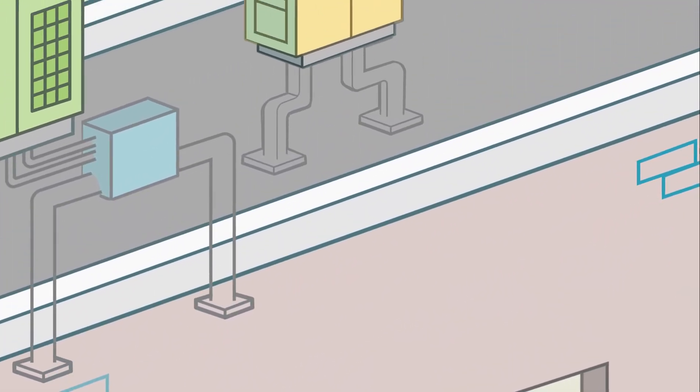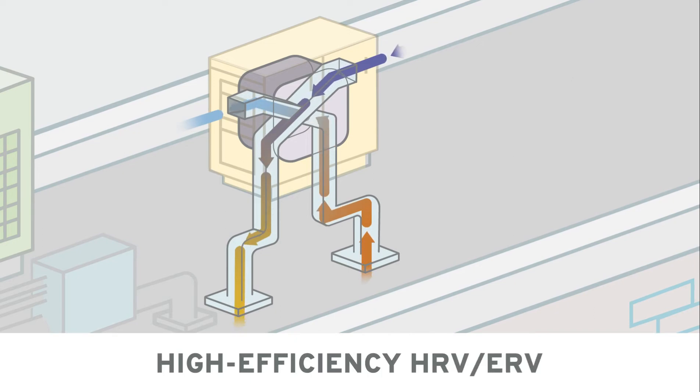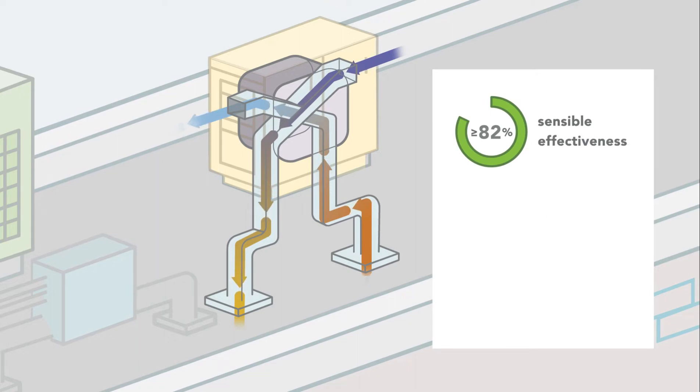Another important aspect of this approach is the inclusion of a high-efficiency heat or energy recovery ventilator that features 82% or greater sensible effectiveness. The high-efficiency ventilation system efficiently preheats incoming air by recovering heat from the outgoing exhaust air in the winter.